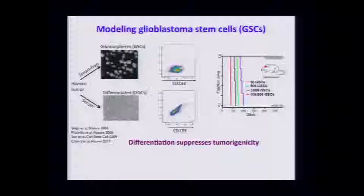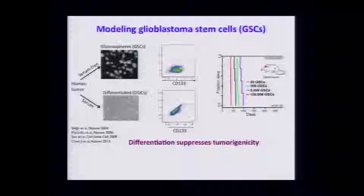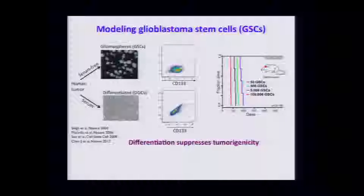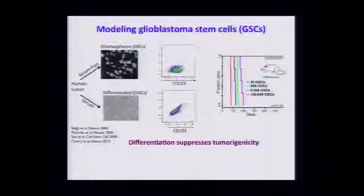One can model these cells, and this is what we do. We actually take human tumors resected at MGH in surgery, and we can expand them in stem-like conditions — in serum-free conditions as glioma spheres. These grow up as spheres, they look a lot like neural stem cells that you might be isolating from ES cells. These glioma spheres express CD133, which is a canonical marker of the stem-like state, and they're very aggressive. You can put as few as 50 of these cells into a mouse brain in orthotopic xenotransplantation and they'll cause a tumor.